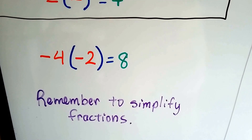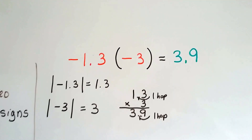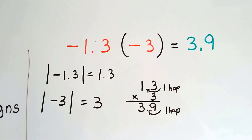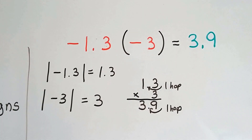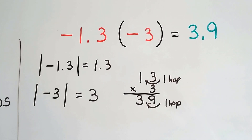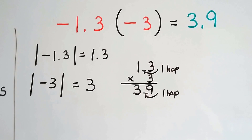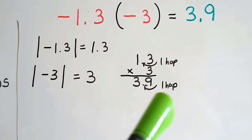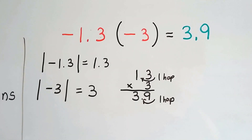Just remember to simplify your fractions when you're multiplying. So let's take a look at this example: negative 1.3 times negative 3. The absolute value of negative 1.3 is 1.3 — we take away the negative sign. The absolute value of negative 3 is 3. We multiply 1.3 times 3. It's easier to multiply decimals when they're stacked. 3 times 3 is 9, 3 times 1 is 3. There was one decimal place in the equation, so we put one decimal place in the product. Our answer is positive 3.9.